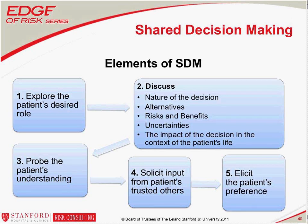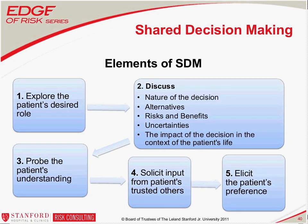The elements of shared decision making include: first, exploring the patient's desired role — research shows at least two-thirds to three-quarters of patients want a role in medical decision making, but some would rather defer to the physician, and there's no way to find that out other than exploring it. Second, discussing the nature of the decision, alternatives, risks, benefits, uncertainties, and the impact on the context of the patient's life — for example, someone facing knee surgery needs to know how long they'll be out of work. Third, probing the patient's understanding. Fourth, allowing the patient to solicit input from trusted others. And finally, soliciting the patient's thoughts and preferences about the desired decision.